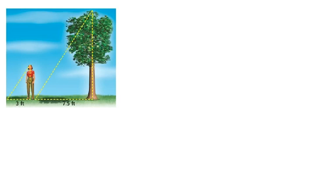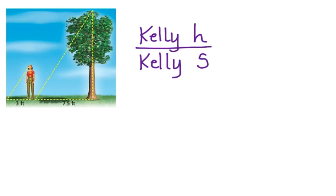Now let's break down the problem so we can solve it. First, let's think about what we're comparing. We're comparing Kelly's height to Kelly's shadow and the tree's height to the tree's shadow. Notice that we've set up a proportion. Now we can substitute the values that we know and solve for the tree's height.